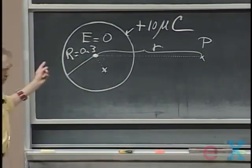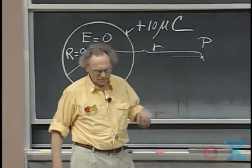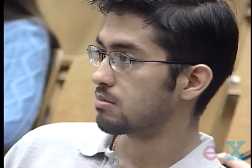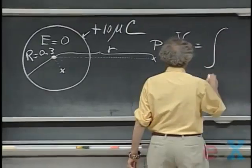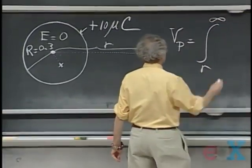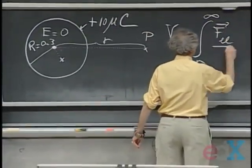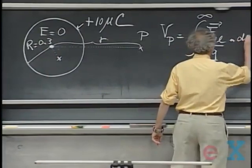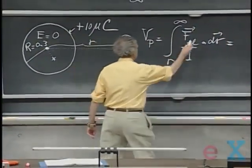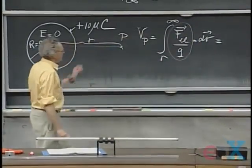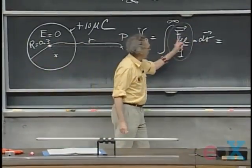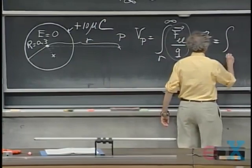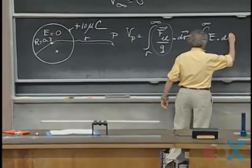So let's first do the potential here. The potential at point P is an integral going from r to infinity. If I take the electric force divided by my test charge Q, dot dr. But this is the electric field. You see, this force times distance is work, but it is work per unit charge. So I take my test charge out, and so this is the integral r to infinity of E dot dr.